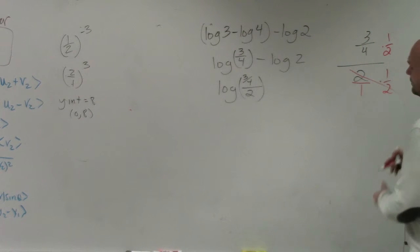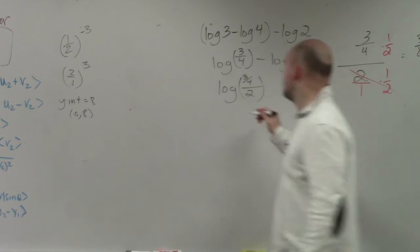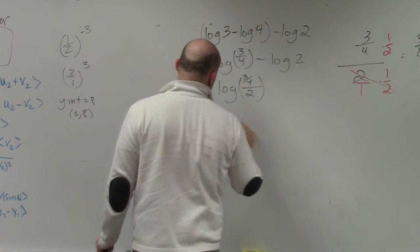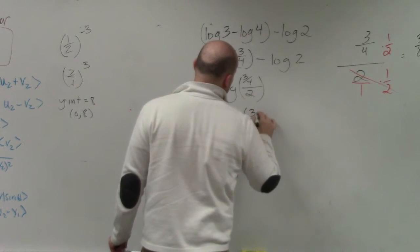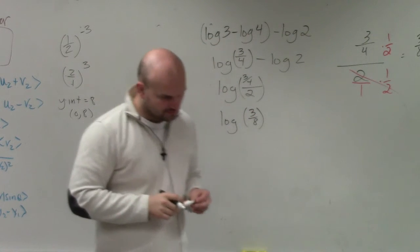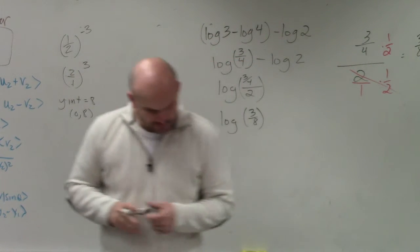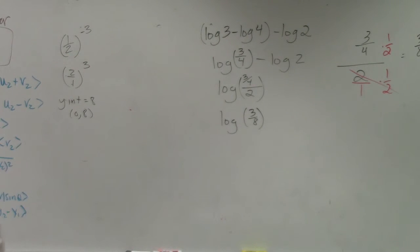Therefore, that goes to 1 and you're left with 3 over 8. So therefore, my simplified form would be log of 3 over 8. That is the answer. That's where? 5.1.1